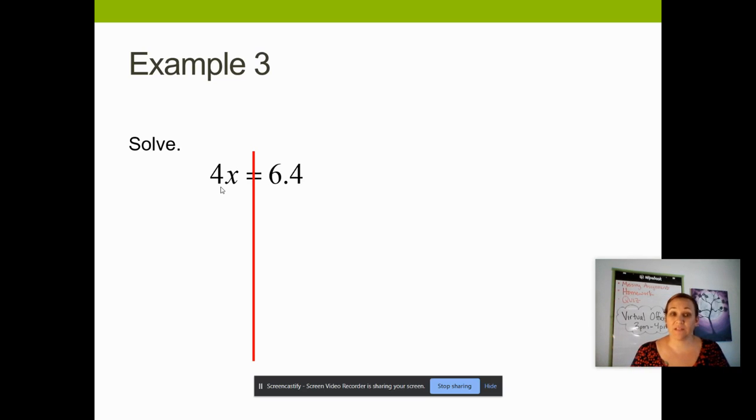Our goal is to get the letter x by itself, so I need to get rid of that multiplied number 4. The inverse operation of multiplication is division. So I will be dividing once on the left and once on the right by the number 4. On the side where the variable was, the 4 and the divided by 4, those will cancel out. That will always happen on the side where the variable is. On the other side, you do need to divide. You may use a calculator to figure out what 6.4 divided by 4 is. For my final answer, I got x equals 1.6.